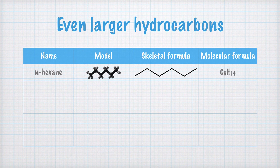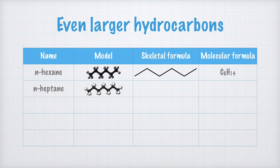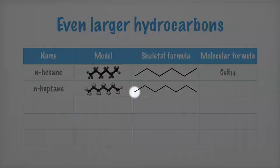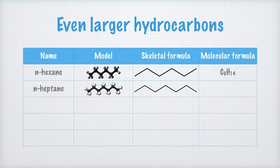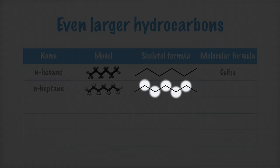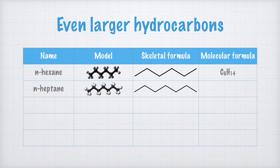After hexa comes hepta in Greek, so in a N-heptane molecule there are seven carbon atoms and 16 hydrogen atoms as well. Do count them if you do not trust me. We write the skeletal formula like this, showing seven carbon atoms linked together with covalent bonds. With two hydrogen atoms on each of the middle carbons, and three on the two end carbons, we have a total of 16 hydrogen atoms.